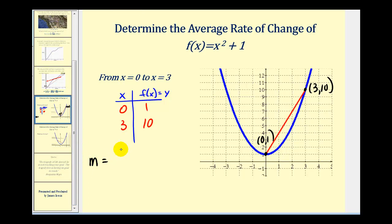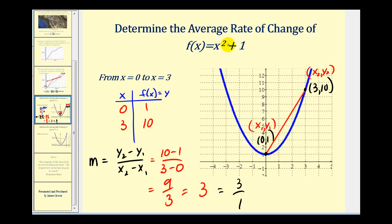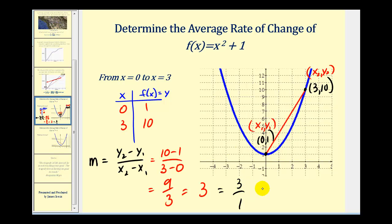The average rate of change is y₂ minus y₁ over x₂ minus x₁. Calling (0, 1) point x sub one, y sub one and (3, 10) point x sub two, y sub two, we have ten minus one in the numerator and three minus zero in the denominator. That gives us nine divided by three, which equals three. So the average rate of change from x equals zero to x equals three is three. To interpret this: slope tells us the change in y with respect to the change in x, so on the interval from zero to three, as x increases by one, y will increase by three.